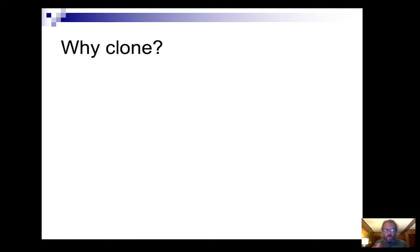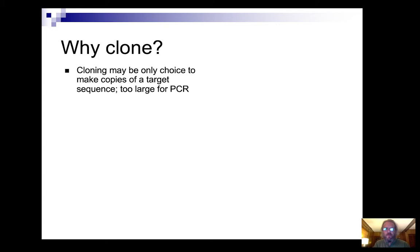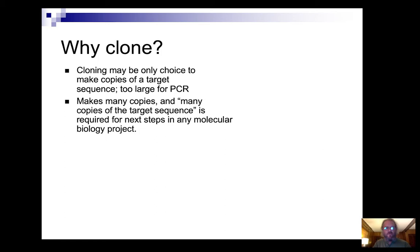So why clone? Cloning is the first and most generic way to make copies of DNA. The methods were first developed in the 1970s and have been greatly enhanced ever since. It's particularly advantageous when you need to make copies of DNA segments that are too large for PCR — PCR is limited to a few thousand base pairs, whereas cloning can handle hundreds of thousands to even millions of base pairs. Just like PCR, cloning is used to make many, many copies of the target sequence.